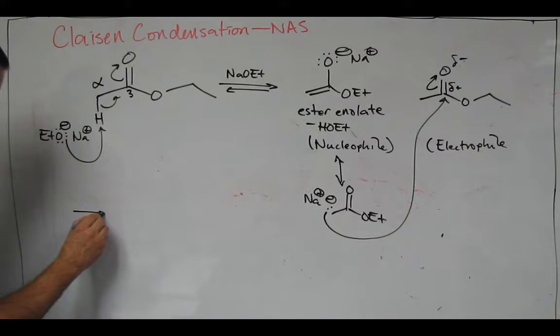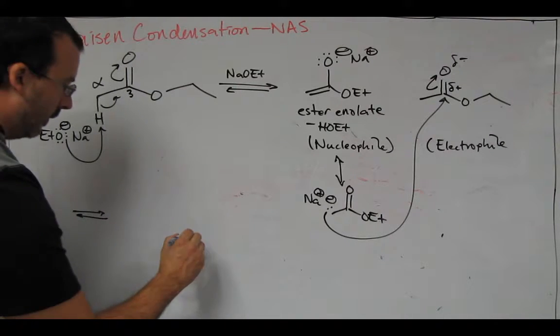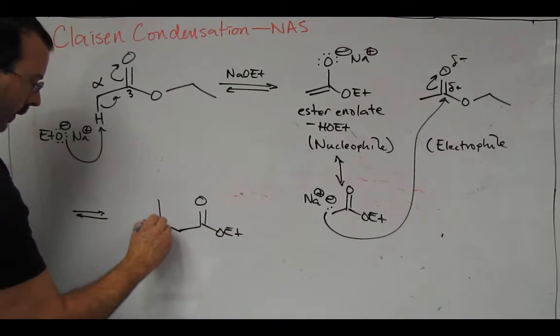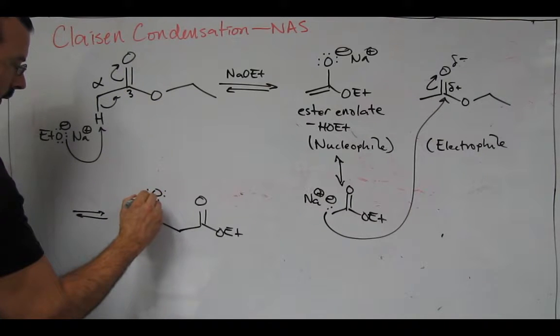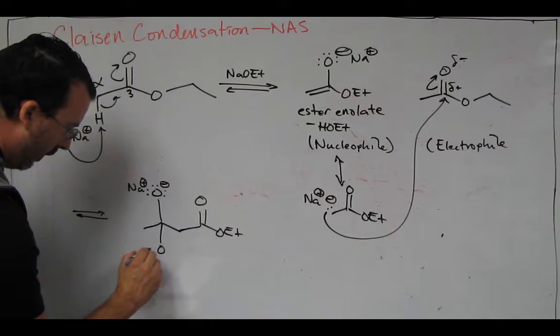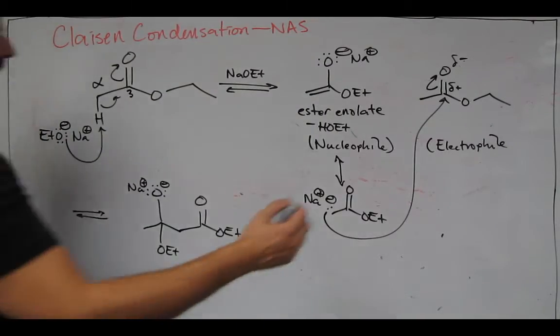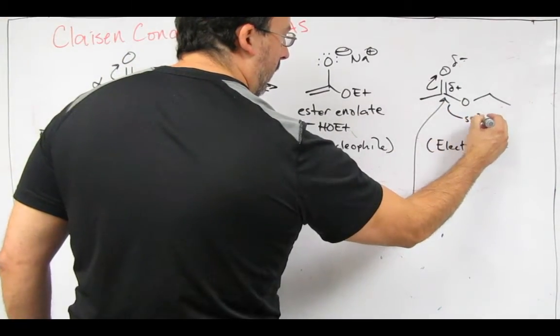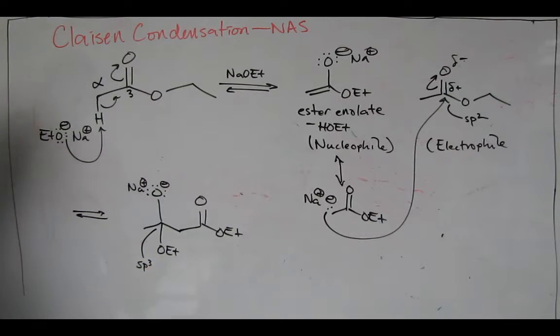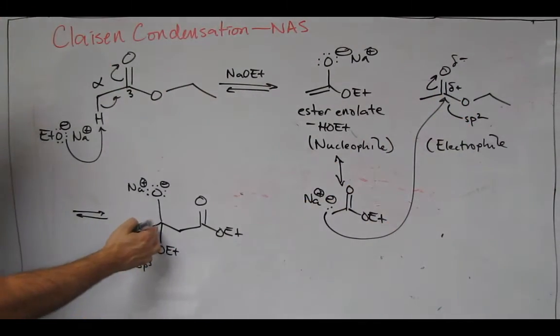This is going to proceed through a tetrahedral intermediate. What I want to point out is that this carbon is starting at sp2. It is now sp3. Again, oxidation state 3, we're now at oxidation state 2.